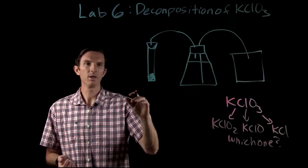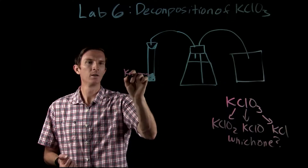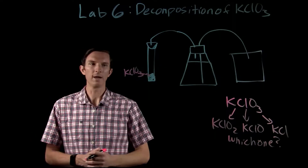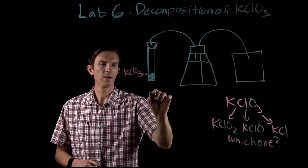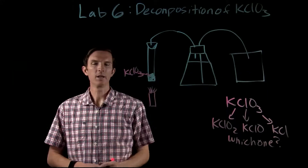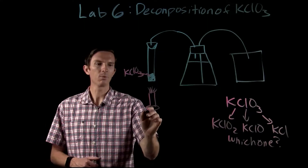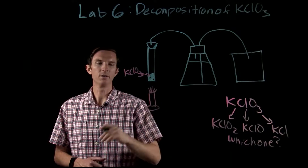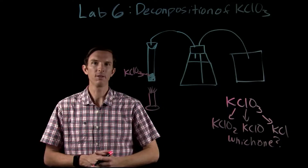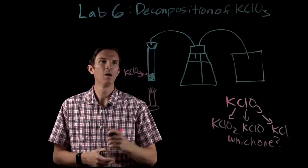In order to do that, we're going to take a sample of our potassium chlorate and get a flame going with our Bunsen burner, heating up our potassium chlorate.